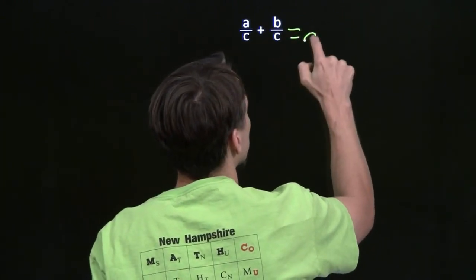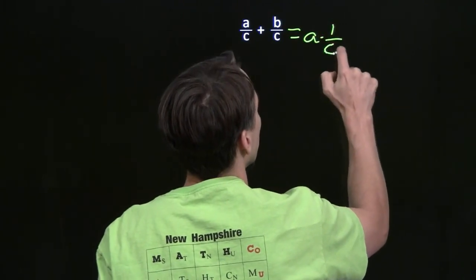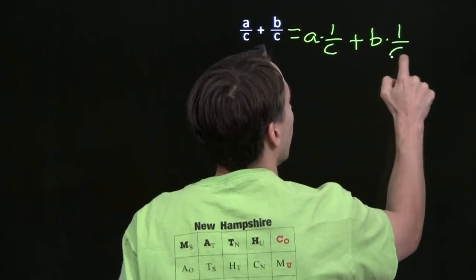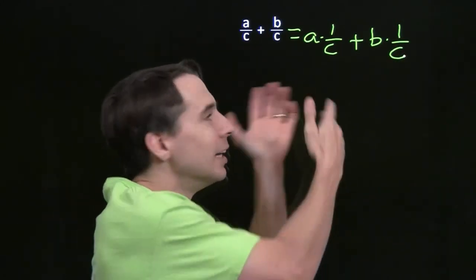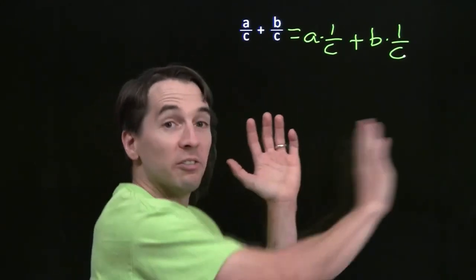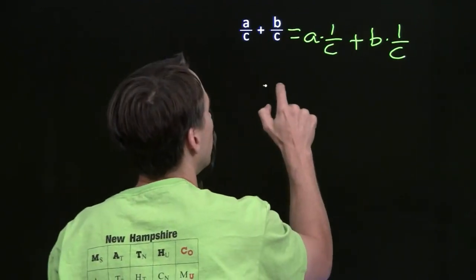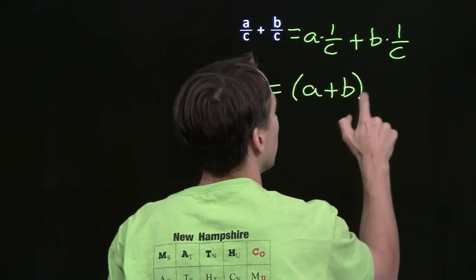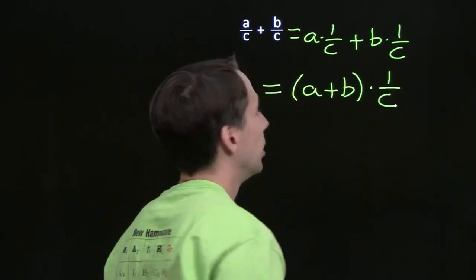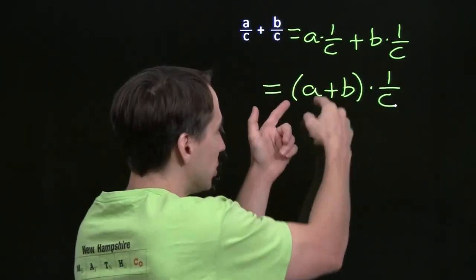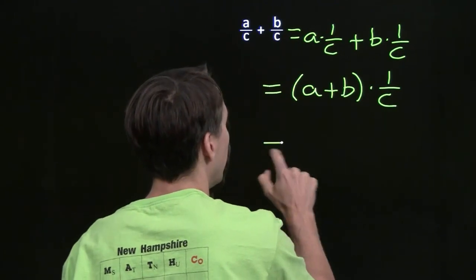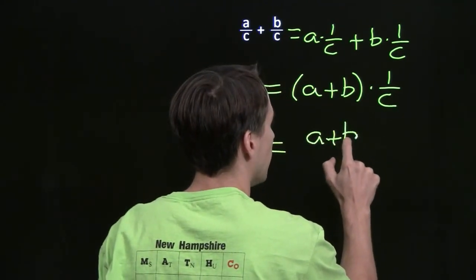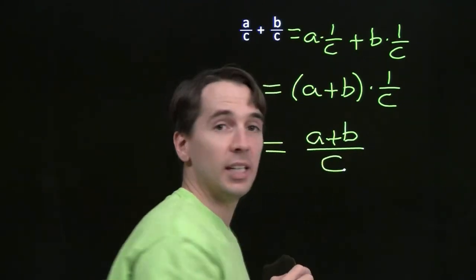a over c is just a times 1 over c, and b over c is just b times 1 over c. It worked! Now we can use the distributive property — we can factor the 1 over c out and we get (a plus b) times 1 over c. When we multiply these two, we just multiply a plus b times the numerator; multiply something by 1, you get that thing back. So this just becomes (a plus b) over c.